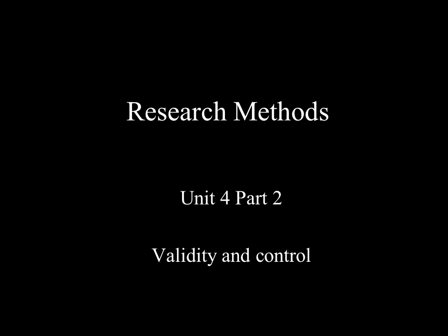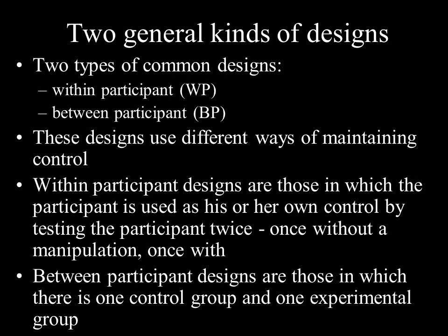So this is Research Methods Unit 4, Part 2, on Validity and Control. The concept we're going to be learning in this short set of slides has to do with two general kinds of experimental designs. The two are called Within Participant and Between Participant. Sometimes you'll see this as Within Subject or Between Subject, but that's a term that is archaic and hasn't been used for about a decade, when the American Psychological Association decided that 'Subject' was not an appropriate term for someone who participates in a study.